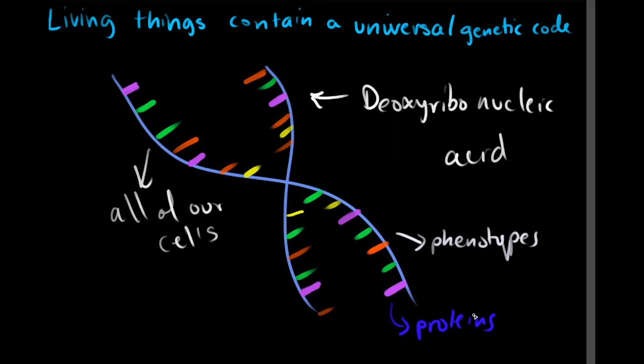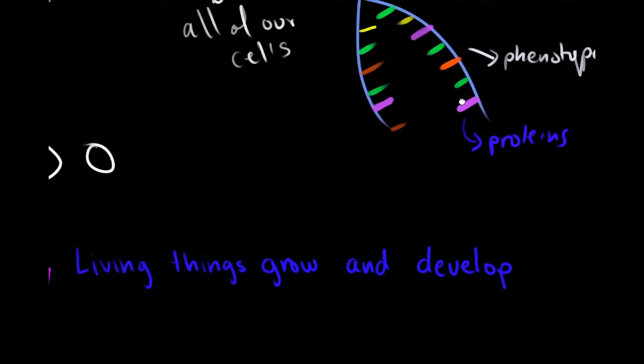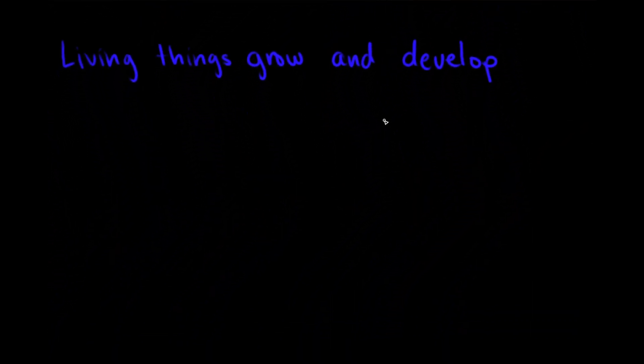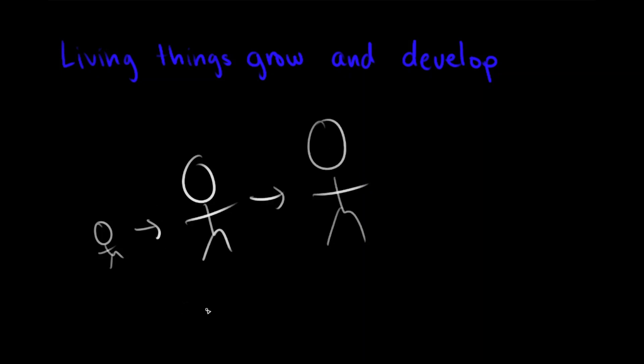Moving on, we now have the fourth characteristic of life. All living things grow and develop. Think about it. From infancy all the way up to late adulthood to even when you grow old, you will always be growing and changing. Your muscles continue to develop, and even your bones get stronger as you gain nutrients such as calcium.